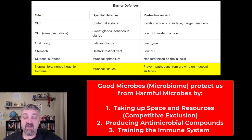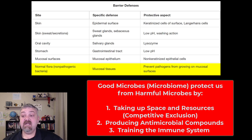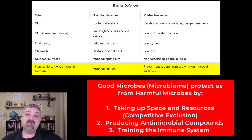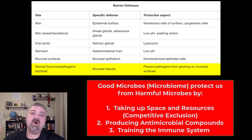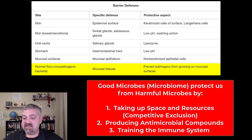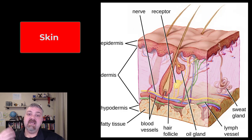If someone gets a C. diff infection in their gut — which kills tens of thousands of Americans a year — one of the best treatments, probably the best treatment, is to transplant somebody else's fecal microbiome into them to help get rid of the C. diff or at least hold it at bay. That's just one really cool example of these nonspecific defenses. Let's walk through a few more barrier defenses.